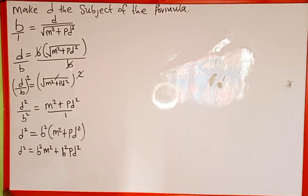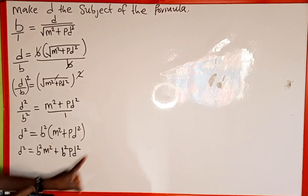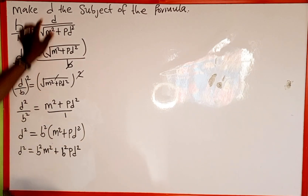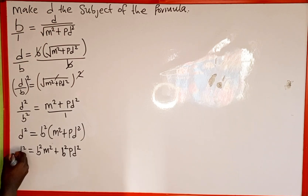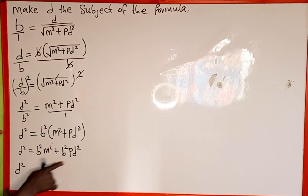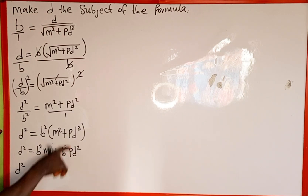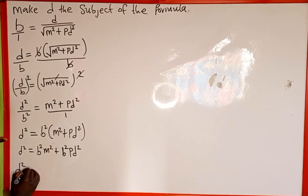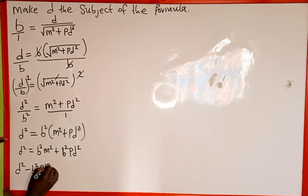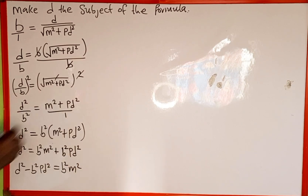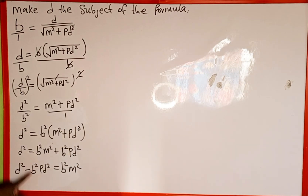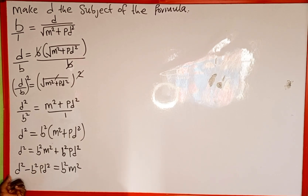The next thing we're going to do is move all terms with d to the left hand side of the equation, because we are solving for d. We have d squared here, and b squared pd squared crosses the equality sign and changes to minus b squared pd squared, which equals b squared m squared on the right hand side.